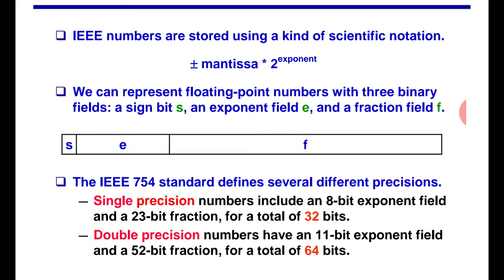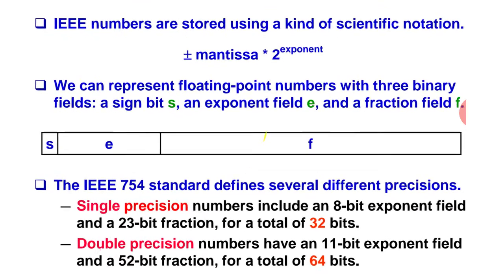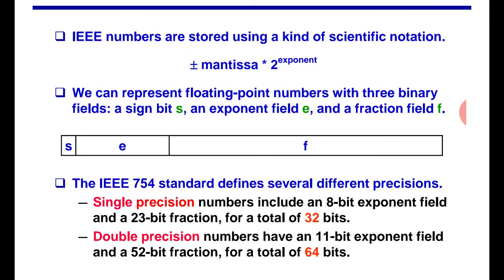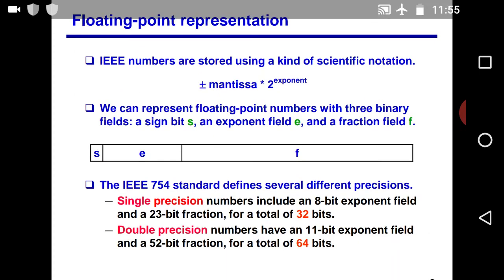The IEEE 754 standard defines several different precisions. Single precision numbers include 8-bit exponent field and 23-bit fraction, for a total of 32 bits. This is from bit 0 to 22, that's 23 bits. Then 23 to 30, that's 8 bits for exponent, and 1 bit for the sign bit.